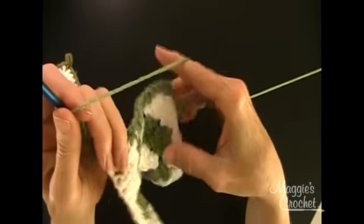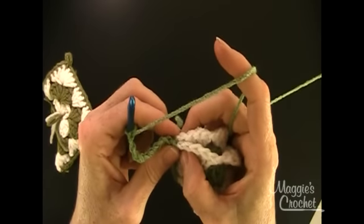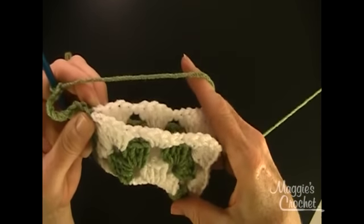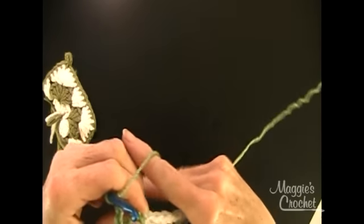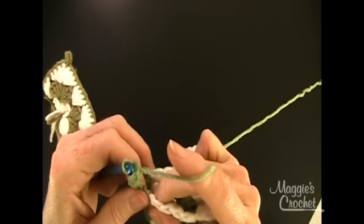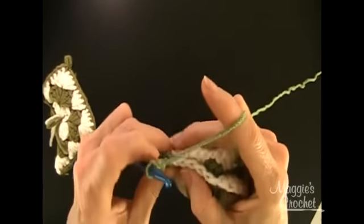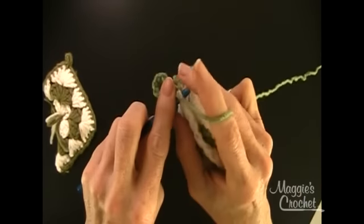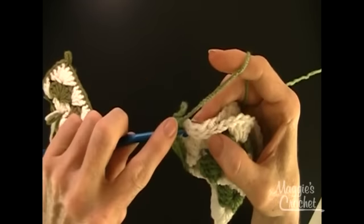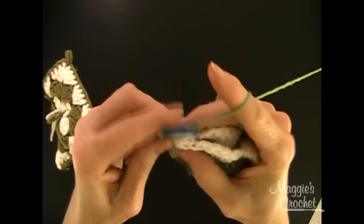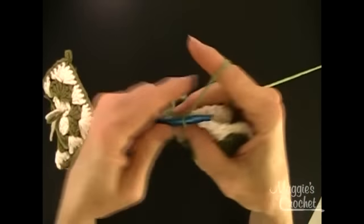And then you fold it in half, which is just like this, and then you match remaining sides and you work through both thicknesses in each treble and chain two space. So you're going to need to do the first single back into the chain two space so that you can create your hanger there, like that. And then you match this side to that side, and you single crochet in each double crochet and chain space around.